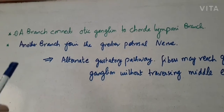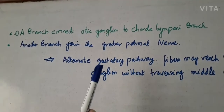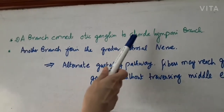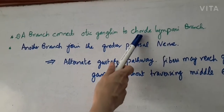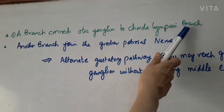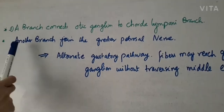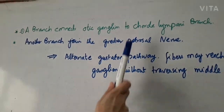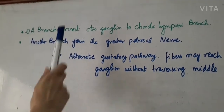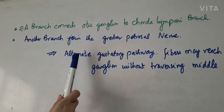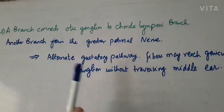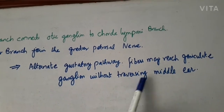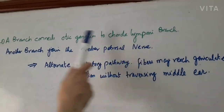A few additional points: one branch goes to the parotid gland. Also, a communicating branch connects the otic ganglion — this is the chorda tympani branch. The chorda tympani carries taste sensation from the anterior two-thirds of the tongue and is a facial nerve branch. Another branch that joins is the greater petrosal nerve, also a facial nerve branch carrying parasympathetic fibres. These two roots, through their connection, provide an alternate gustatory pathway, so taste fibres may reach the geniculate ganglion without traversing the middle ear.